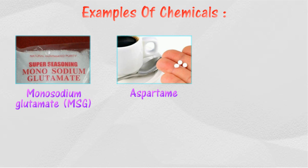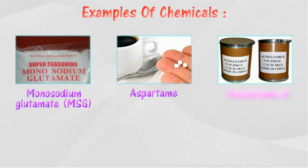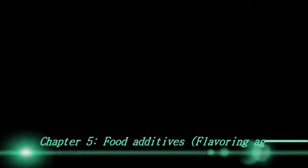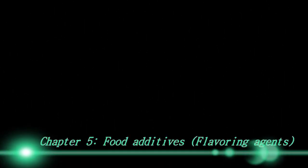However, aspartame is not suitable for cooking food. Acesulfame K is an artificial sweetener used in soft drinks, yogurt, and desserts. It can be used at higher temperatures.